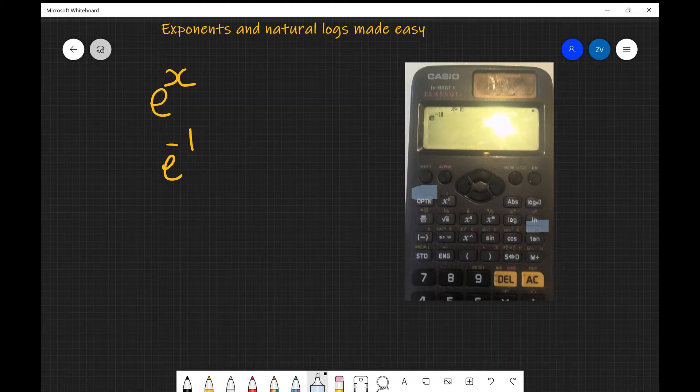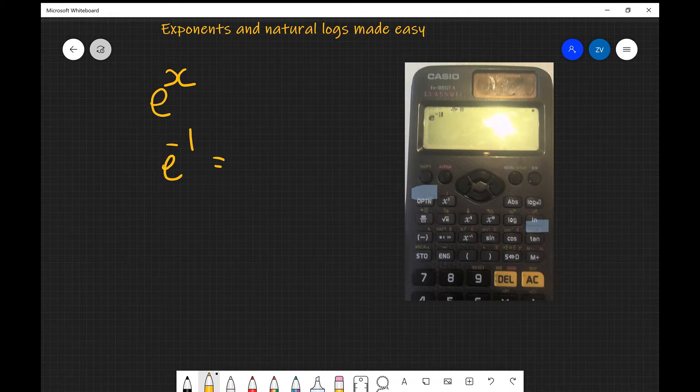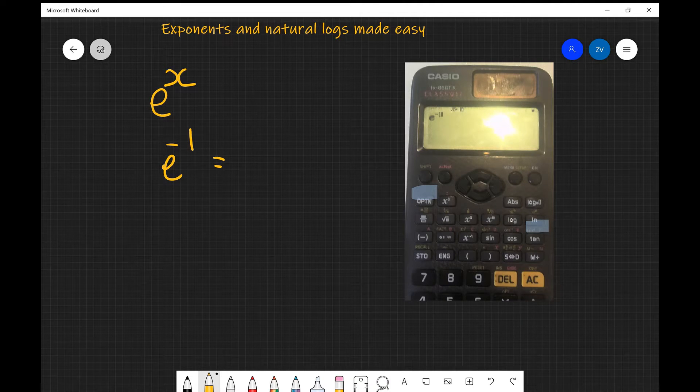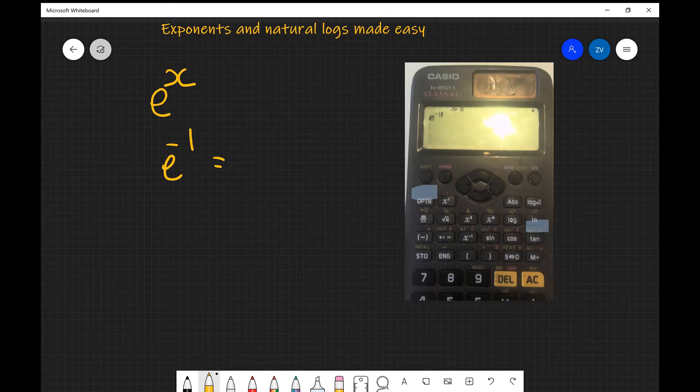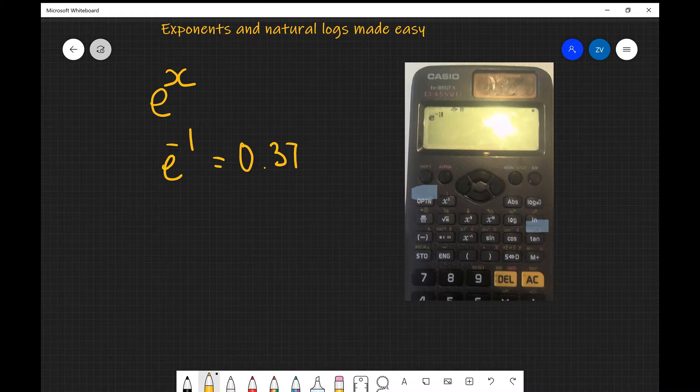So we can use that and we could literally just type in our calculator e to the power of minus 1, and if you input this you're going to get that e to the power of minus 1 is approximately equal to 0.37 up to two significant figures.